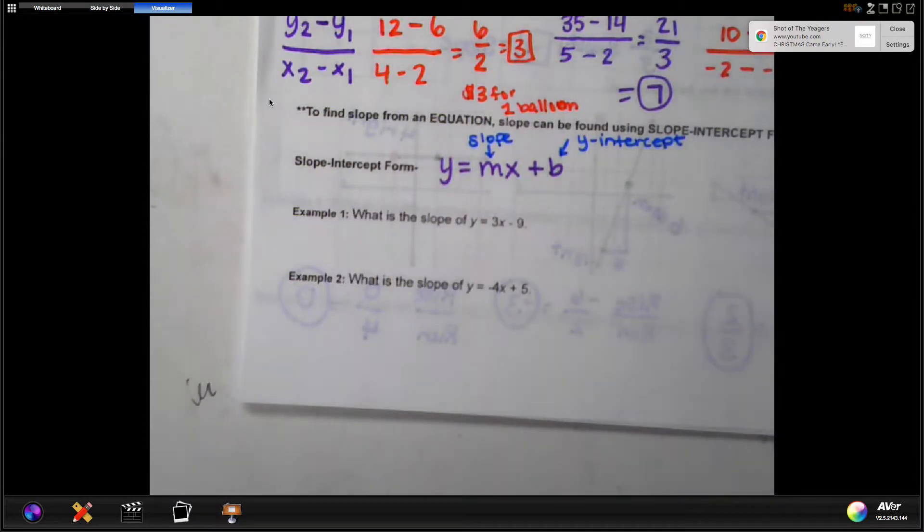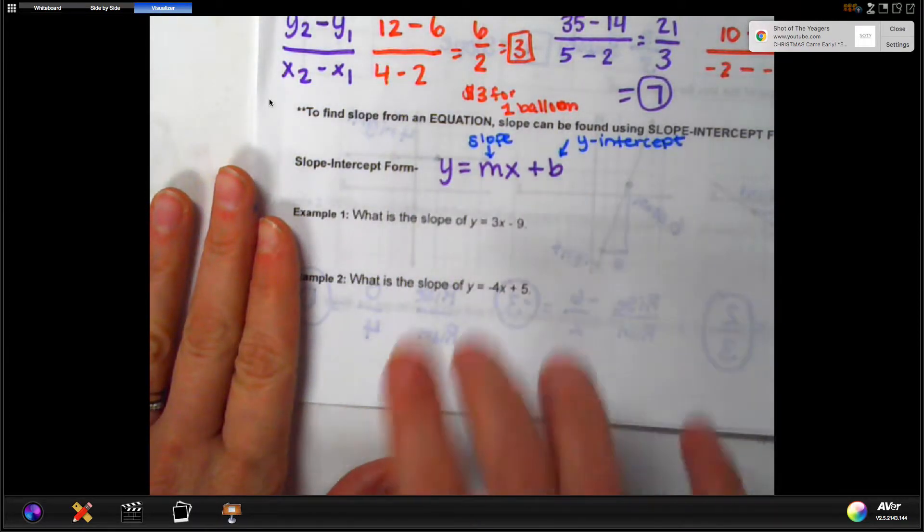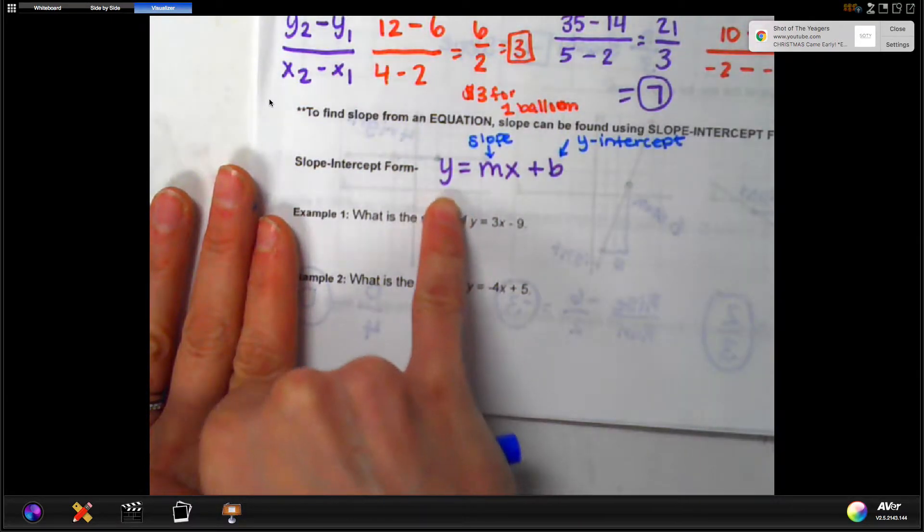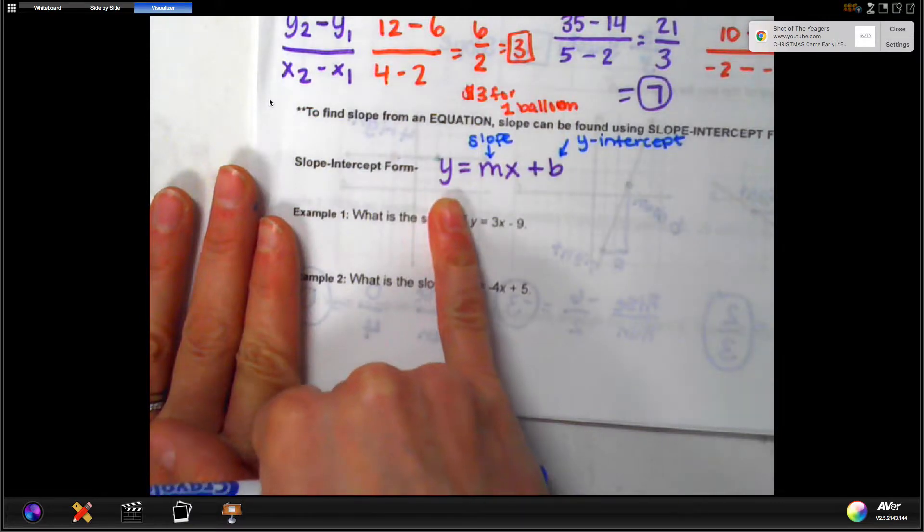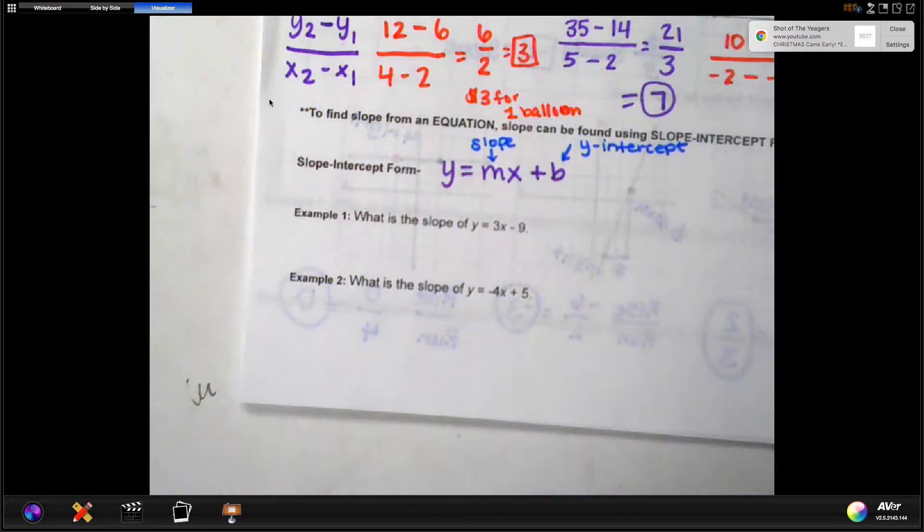So what we want to do today is focus on identifying the slope, and we'll do the y-intercept in a later lesson. Now, the key is that in order to identify the slope, it has to be in this format where y is alone on one side of the equation. Generally, we have the y alone on the left side of the equal sign, but it can be alone on the right side too.